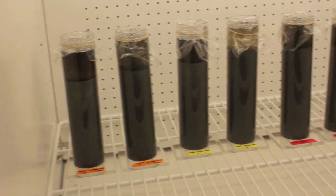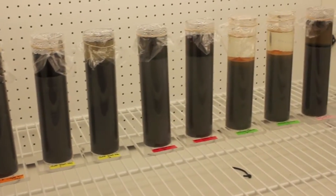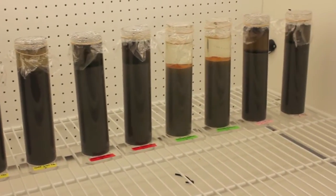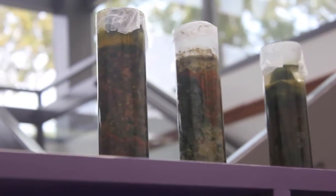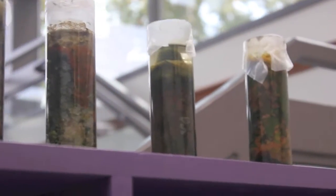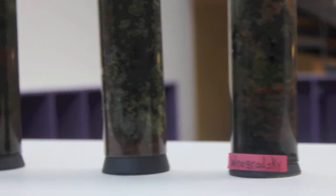Over time, bacteria grow in the different environmental niches in the column, and you get these beautiful colors of different bacterial colonies growing at different depths in the column. What develops is this complex, interacting community of bacteria.